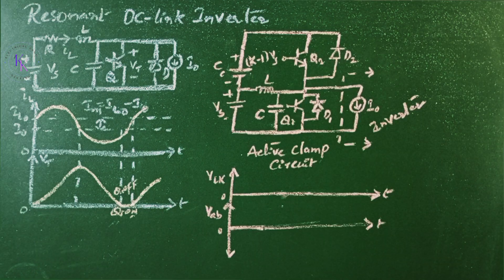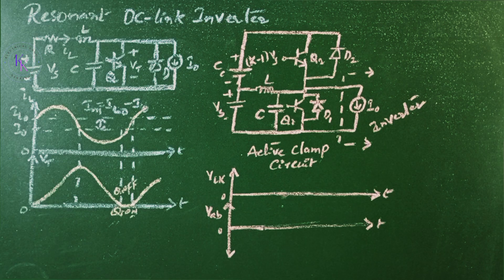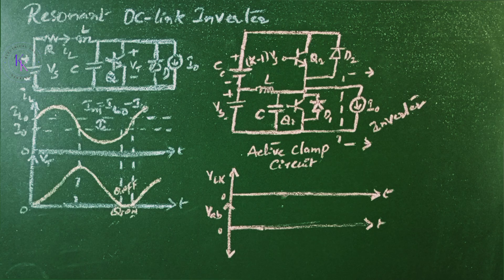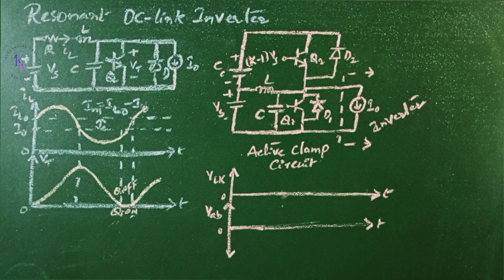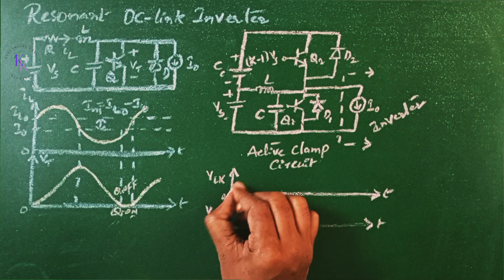The DC link resonance circuit is normally started with a fixed value of initial capacitor current. This causes the voltage across the resonant DC link to exceed 2 Vs. And all the inverter devices are subjected to high voltage stress. So, an active clamp as shown in this circuit can limit the link voltage as shown here.